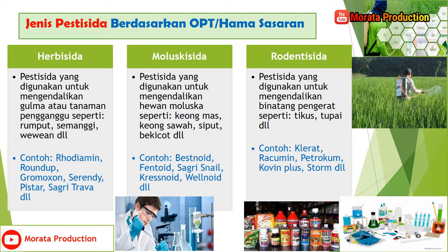Yang kedua, moluskisida, yaitu pestisida yang digunakan untuk mengendalikan hewan moluska seperti keong emas, keong sawah, siput, bekicot, dan lain-lain. Contoh produknya yaitu Besnoid, Ventoid, Sagrisnel, Krisnoid, Welnoid, dan lain-lain.